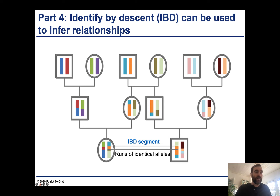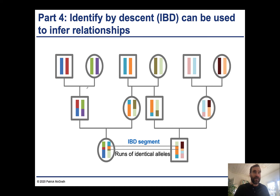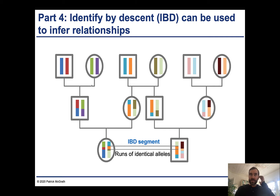The final part of this lecture is going to cover identity by descent and how that is used to infer ancestry, recent ancestors, and also is useful for identifying ancient introgressions between different hominids.